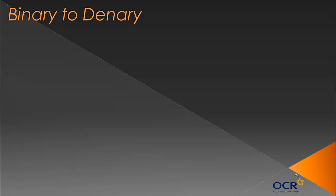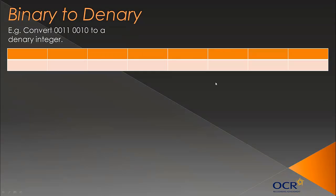Now let's look at the inverse — going from binary to Denary. This is slightly different so it's important we know how to do it. Our example is: convert 00110010 to a Denary integer. We set up our table — you can see immediately it's a byte. A byte is usually separated into two groups of four by a space.